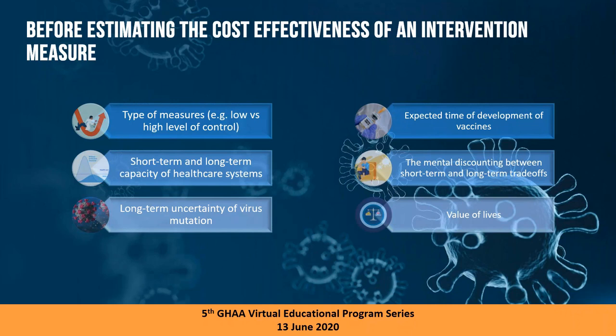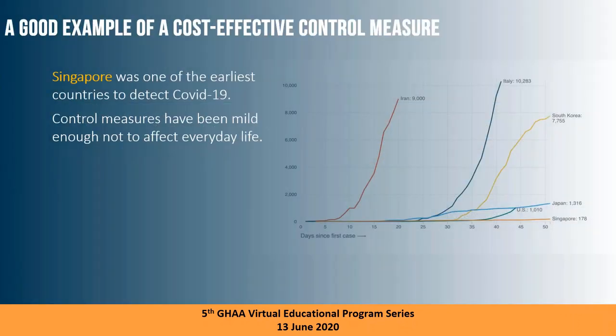Discounting is another important topic. You have to set the value applied based on what it means to pay for risk reduction. A good example of a country that actually performed cost-effectiveness analysis for control measures is Singapore — they kept case numbers under 10 in the first 50 days from the first case, with only mild control measures, losing only about 25% of income, which is very favorable.